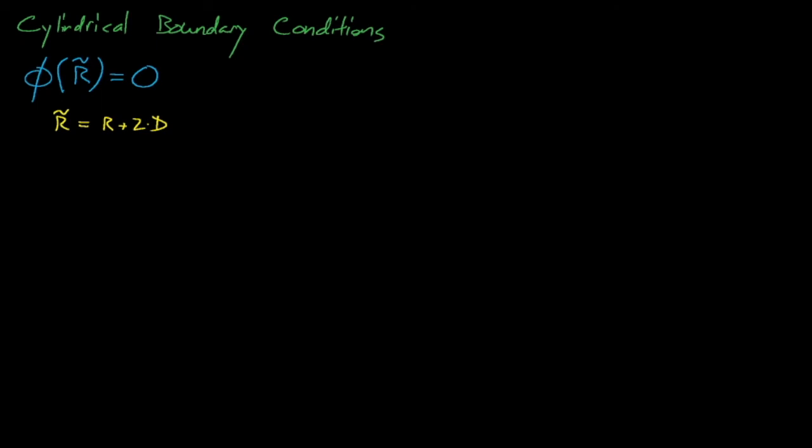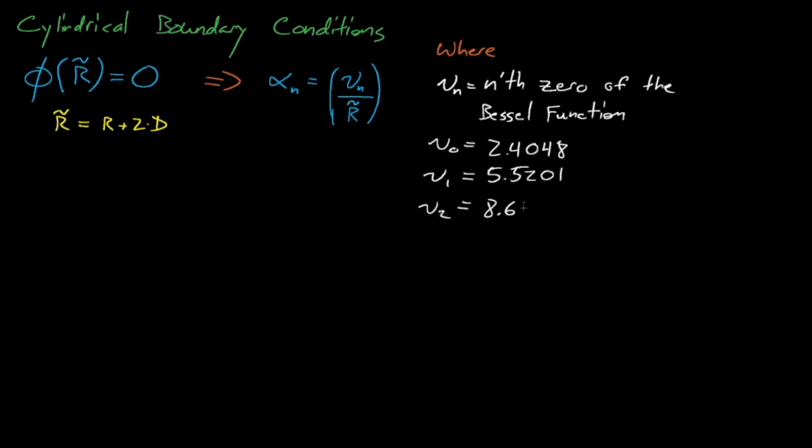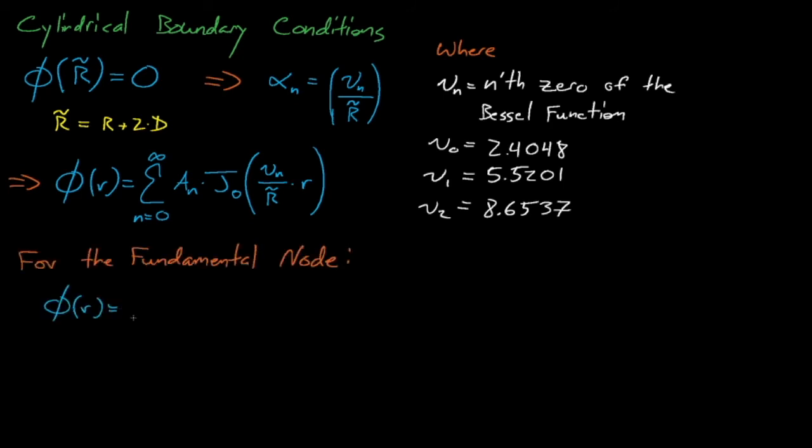So once again, our flux is represented by this infinite series of functions, which are now Bessel functions instead of cosines. Just like with our cosine series, the higher order zeros of the Bessel function represent the higher modes of the neutron flux. And the fundamental mode of the flux only uses this first term, where nu0 equals about 2.4048. This implies that the alpha squared constant must equal nu0 divided by r tilde squared.